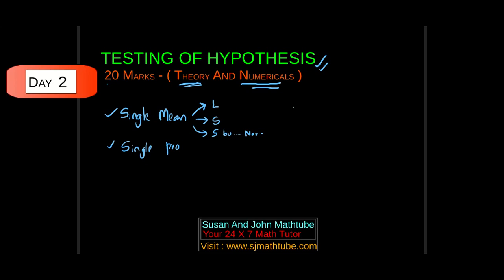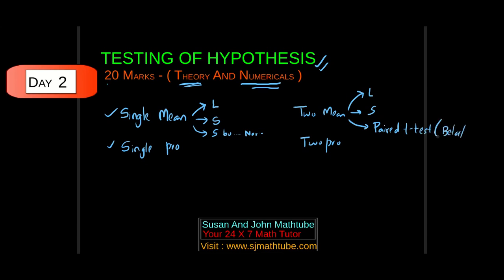Similarly, you start with two mean and two proportion. In two mean, you can see large, small, and one very important test called the paired t-test. The paired t-test is used to check before-and-after events.